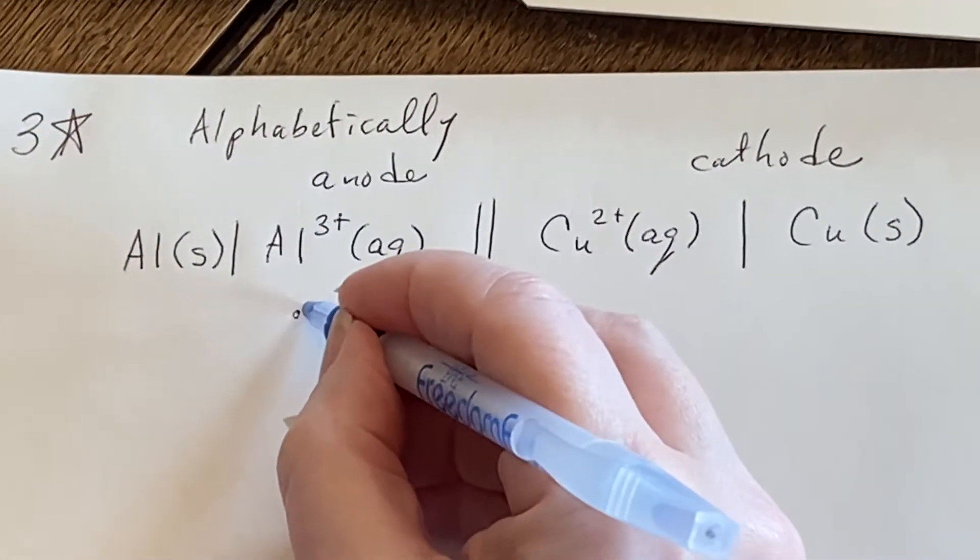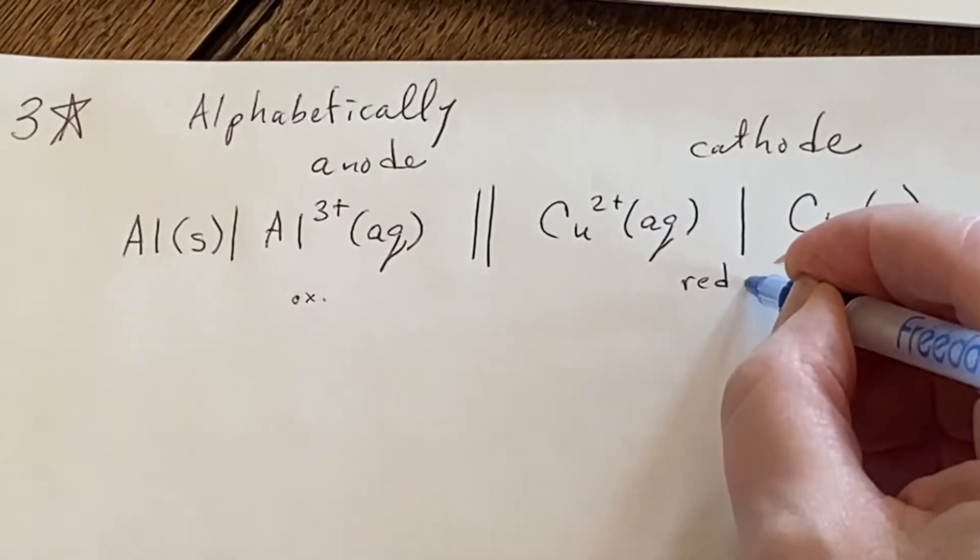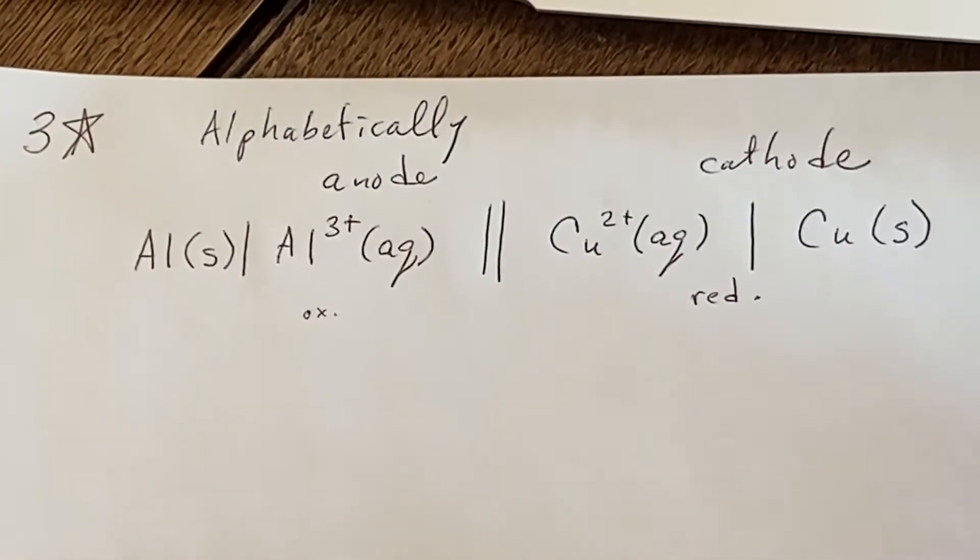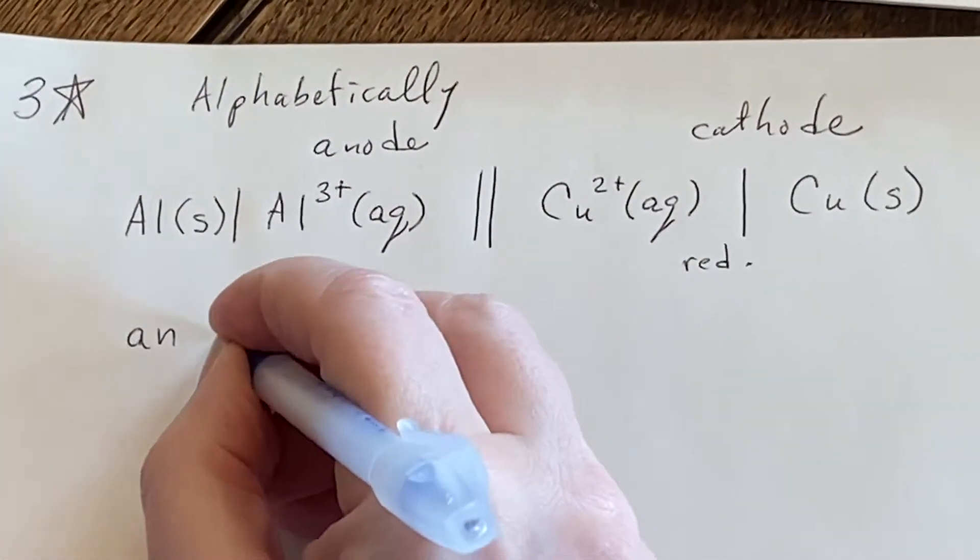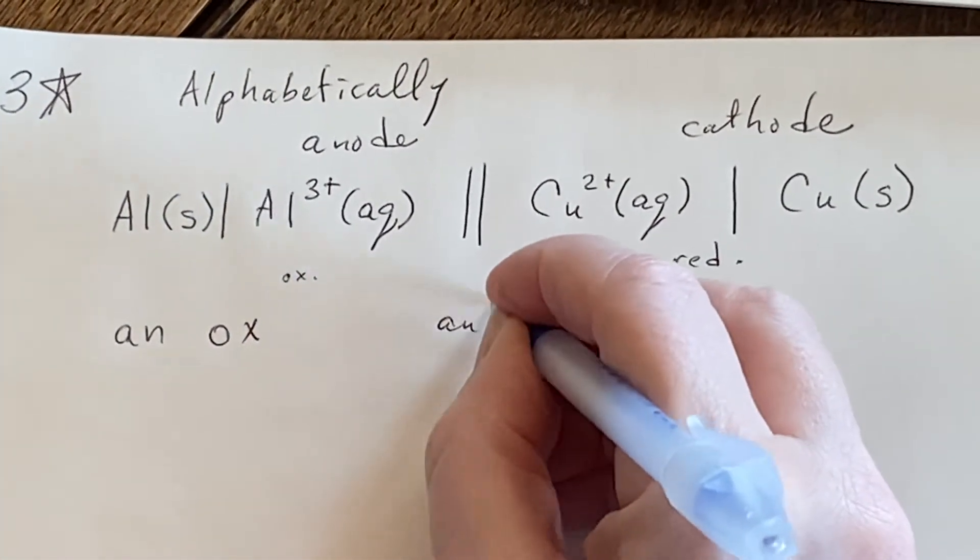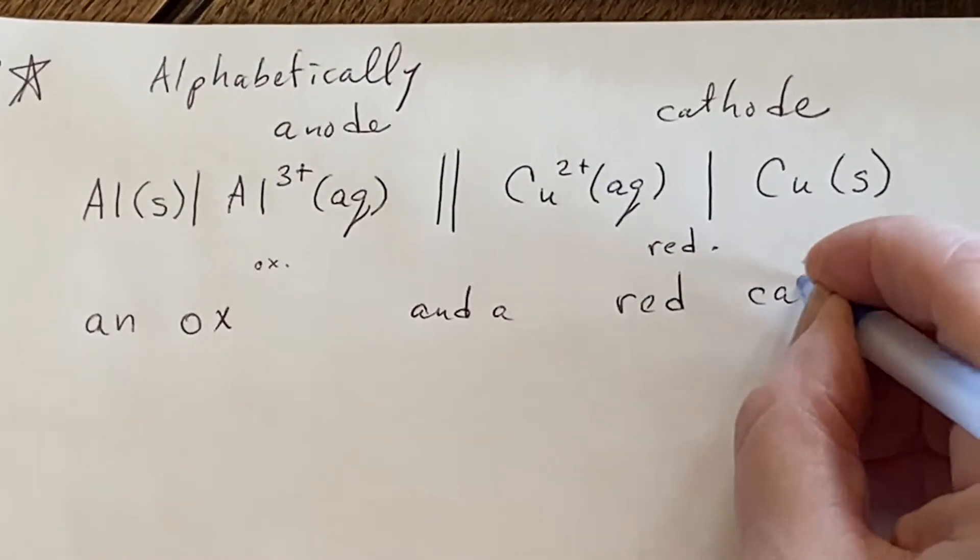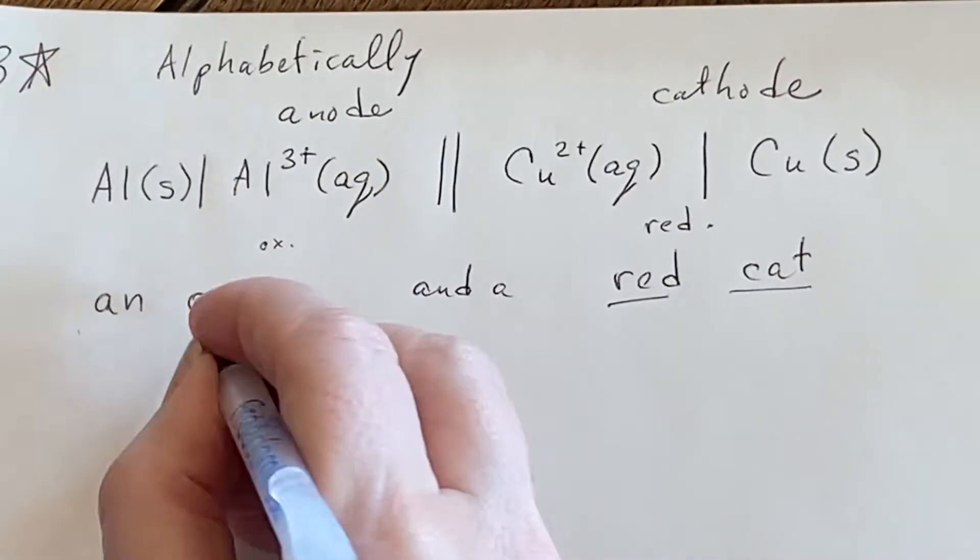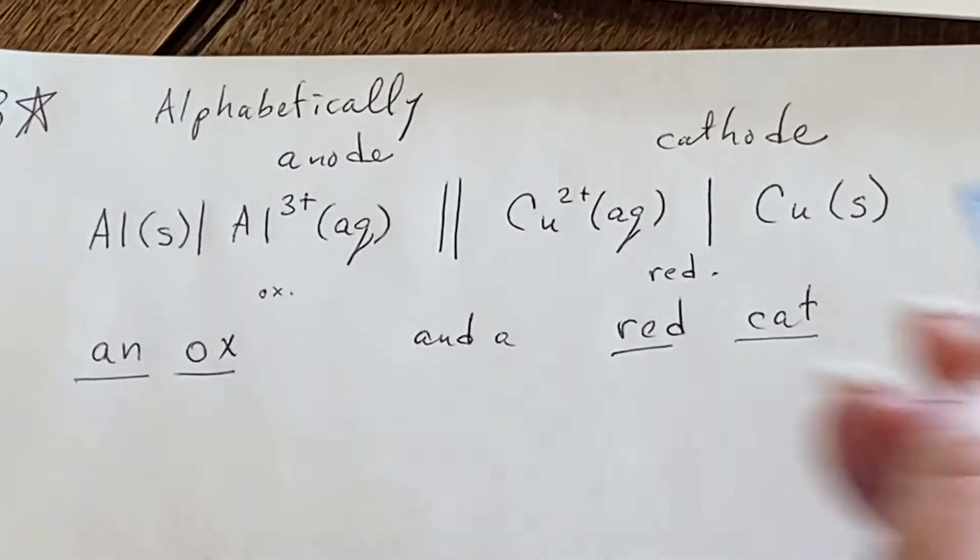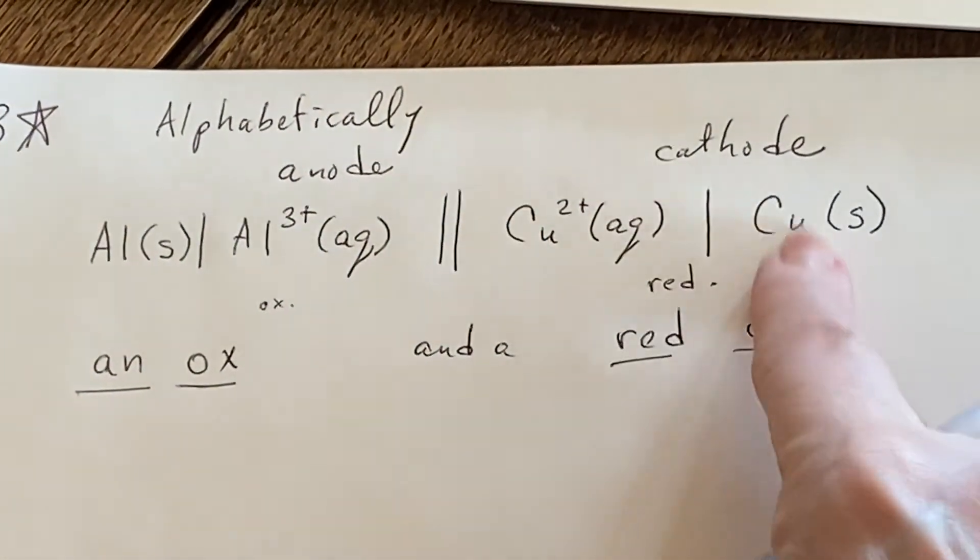Anode is where the oxidation occurs. Cathode is where the reduction occurs. And I have a little way that I like to remember this. It's an ox and a red cat. That way I will remember reduction happens at the cathode. Oxidation happens at the anode.